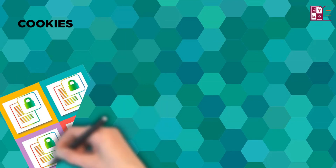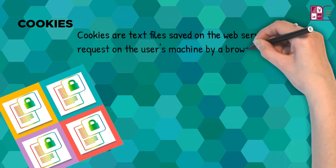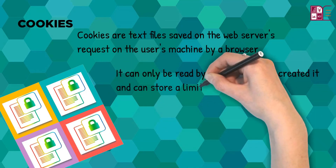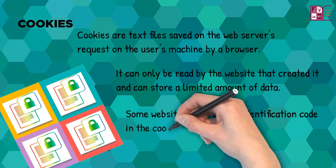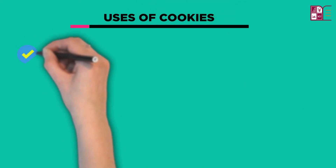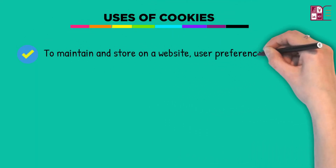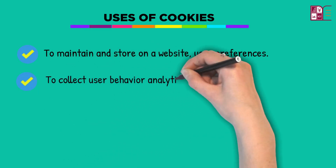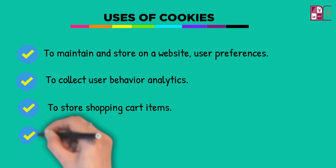Cookies: They are text files saved on the user's machine by a browser upon a web server's request. A cookie can only be read by the website that created it and can store a limited amount of data. Some websites add a unique identification code in the cookie to store data in their database, avoiding cookie size limitations. These are not malware, viruses, or any other programs that can perform actions. You can easily disable these from your browser settings. Uses of cookies include: storing website user preferences, collecting user behavior analytics, storing shopping cart items, and showing relevant ads.